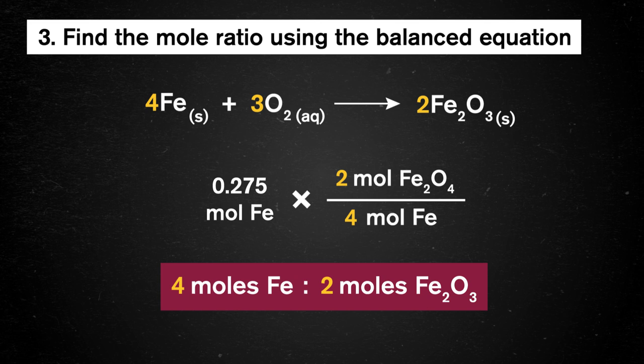In our calculation, we'll put the 4 moles of iron in the denominator, so iron will cancel, and we'll get an answer in moles of iron oxide.